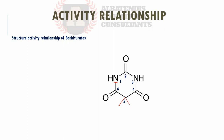Branching, saturation, and aromatic substitution at C5 increases lipophilicity and thus enhances activity. Since barbiturates act on the central nervous system, they need to cross the blood-brain barrier. Increasing branching or having aromatic substitution at the fifth position means higher lipophilicity, which leads to greater activity.